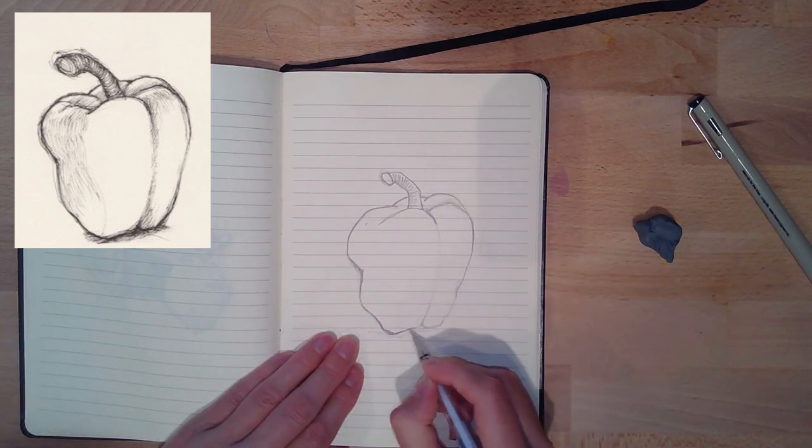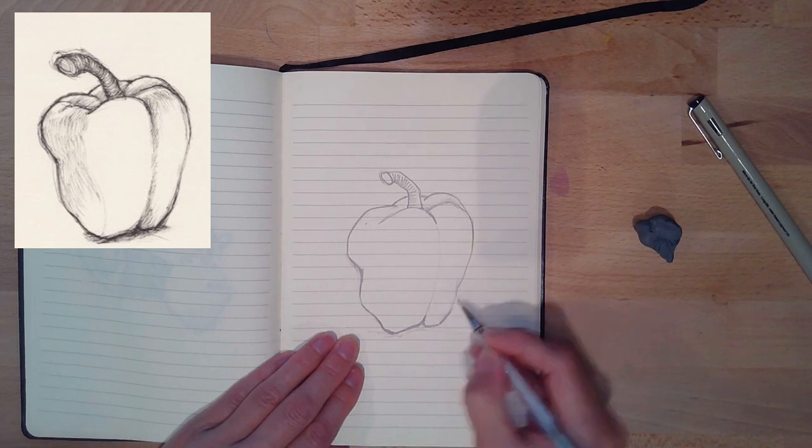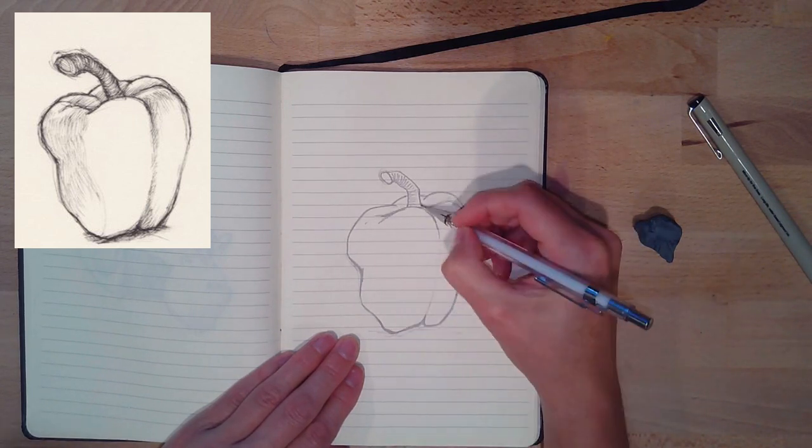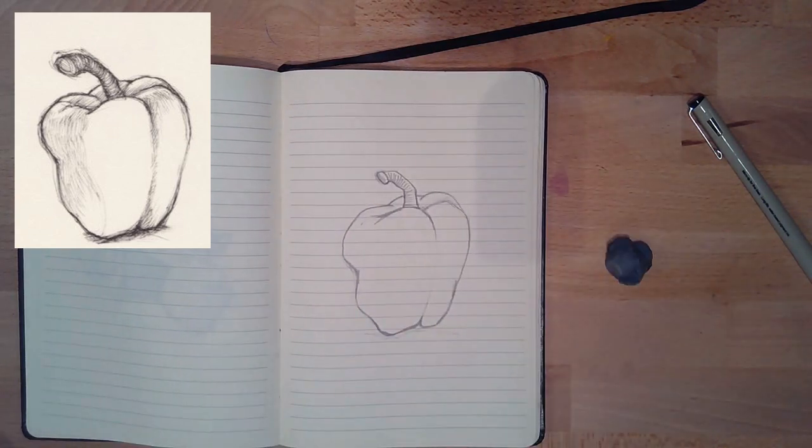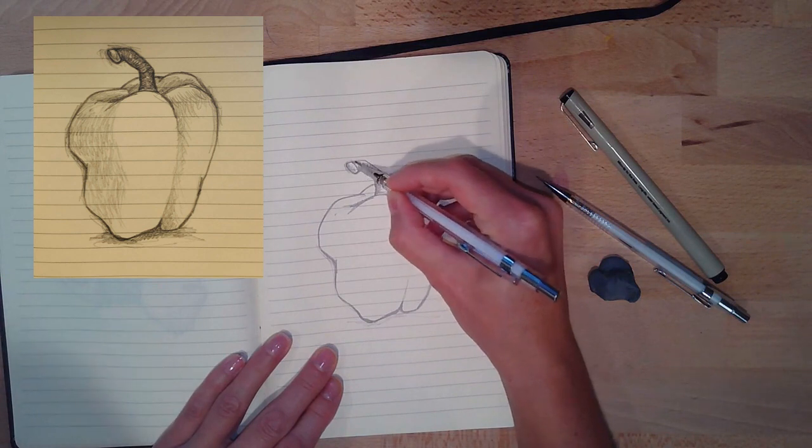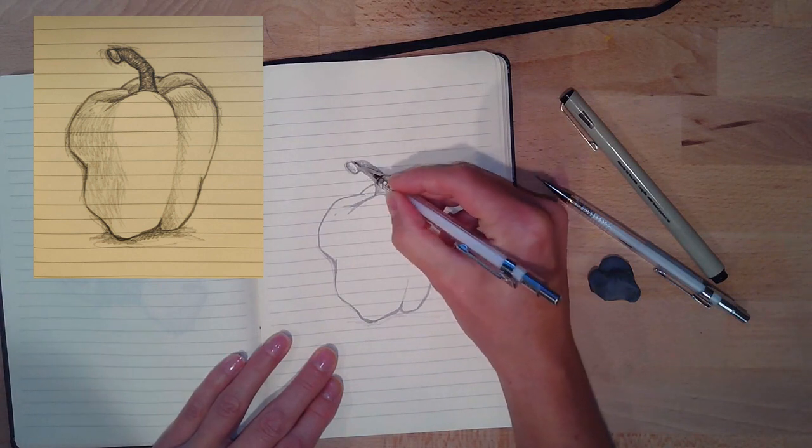Mine's a bit short and I probably should have made the tip of the stem a little bit bigger with that oval, but again it reads like a bell pepper. I've gone through and strengthened up my lines, and I'm going to add some shading. This is just quick value.